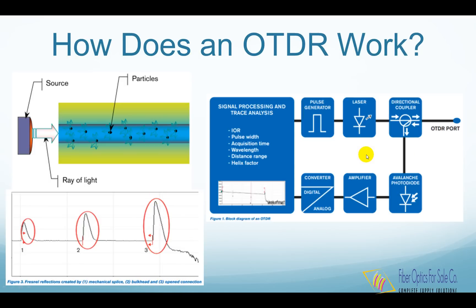This illustration shows the construction of an OTDR. The pulse generator generates a short electrical pulse, which drives the laser to generate a corresponding light pulse. The light pulse is coupled into the fiber under test. When some light is reflected back from the fiber, it is coupled into a photodiode by the directional coupler. This photodiode converts the light signal into an electrical signal, which is then amplified and recorded, producing the trace as shown here.